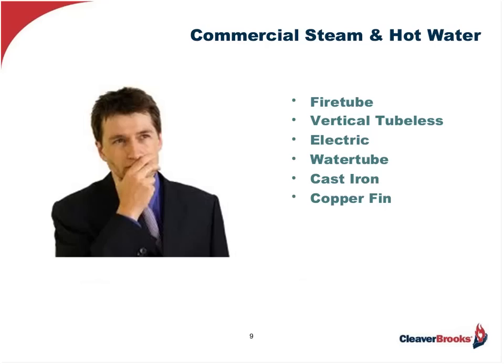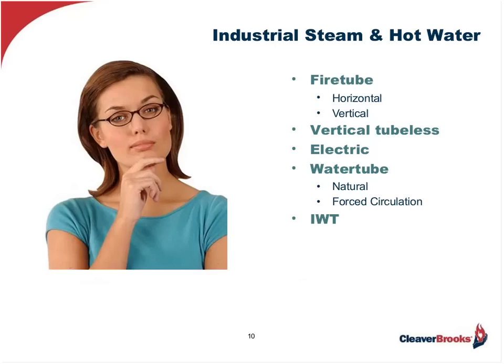In the commercial segment, needs can be satisfied with an array of boiler types including fire tubes, vertical tubeless boilers, electric boilers, water tube, cast iron, and copper fin boilers. Most will be built in accordance with Section 4 of the ASME code for low pressure. The industrial segment emphasizes process steam, with boiler types somewhat similar to commercial products, though cast iron and copper fin boilers have been eliminated due to their inability to achieve higher design pressure. In the industrial segment we have fire tube boilers both horizontal and vertical, the vertical tubeless, electric, water tube both natural and forced circulation, and large industrial water tubes — also known as IWTs.